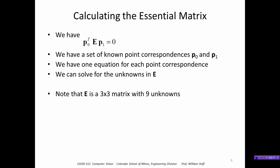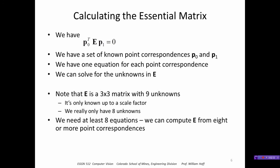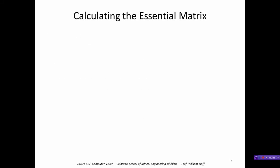We're going to solve for the unknowns in E. E is a 3x3 matrix with nine unknowns. However, since the equation equals zero, we could scale E by any amount and the result would still be zero. So E really only has eight unknowns, meaning we need a total of at least eight equations. We can compute E from eight or more point correspondences.